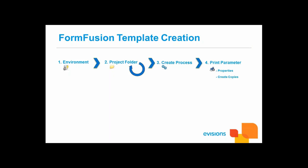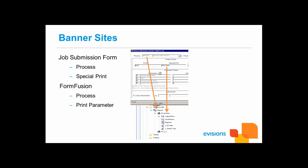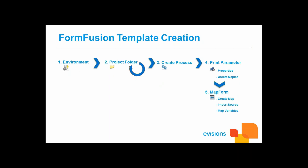Next, we start creating the template by starting with a process — a process name that will be run in your ERP system, called by the print command. Within the process, a print parameter is created where you can select a number of copies, set up sorting, and add any special processing. For Banner sites, the special print parameter corresponds to the special print box on the job submission form. The FormFusion print parameter is called upon by entering its name into the special print box. The first component created in a print parameter is the map form object, where all variables are mapped using the information from the input file — which could be LIS, CSV, or TXT.